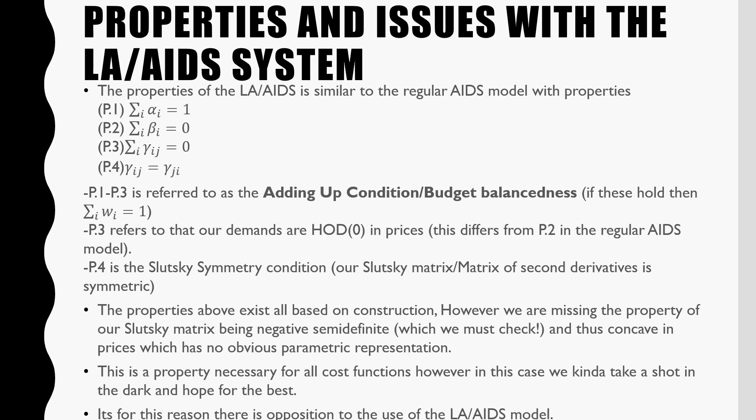So what the LA-AIDS model really is is just kind of a shot in the dark. We take a best guess, because we're unable to go and estimate the Almost Ideal Demand System. And it's for this reason there's opposition to the use of the Linear Approximate Almost Ideal Demand System. We have these properties, and the reason why this is problematic is because we're unable to really check if our cost function is well defined.